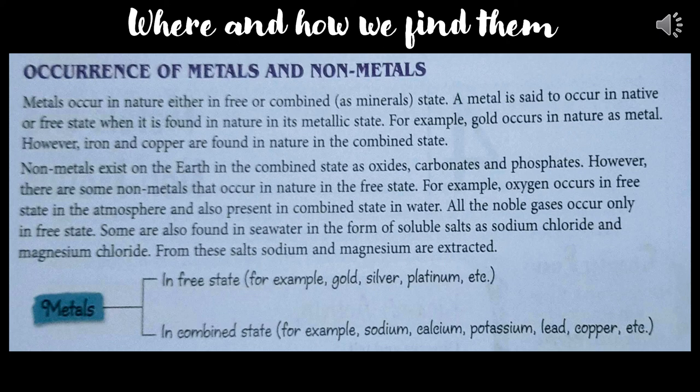Similarly, nonmetals exist on Earth in combined state as oxides, carbonates, or phosphates. However, some nonmetals occur in free state — for example, oxygen occurs in free state in the atmosphere and also in combined state in water. All noble gases occur only in free state. Some are also found in seawater as soluble salts like sodium chloride and magnesium chloride, from which sodium and magnesium are extracted.